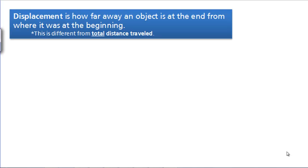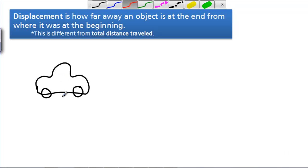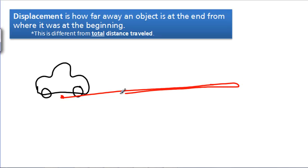Now we're going to talk about displacement. Displacement is how far away an object is from where it was at the beginning. If you have a car and your car starts out right here and it drives over there and then comes back again,